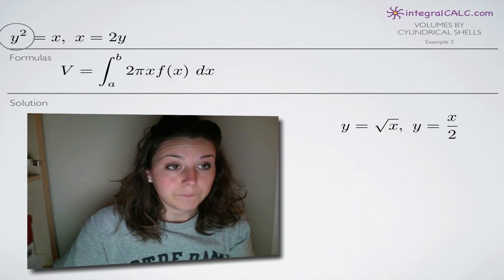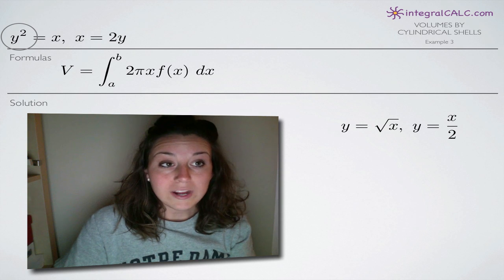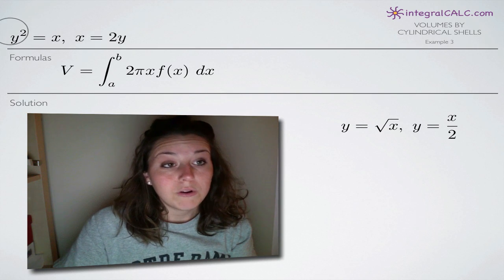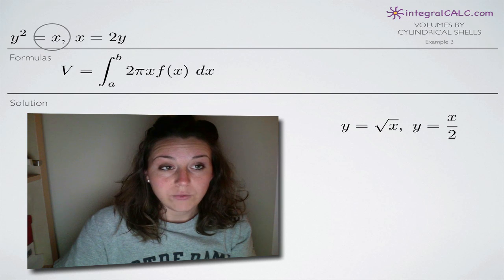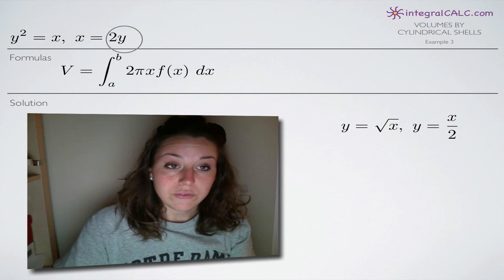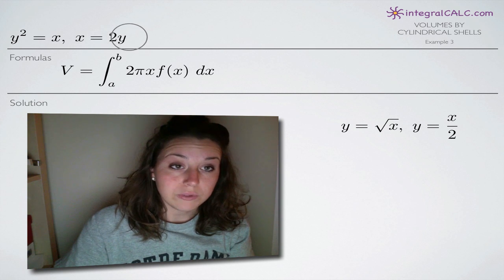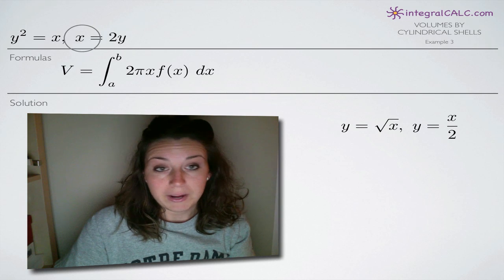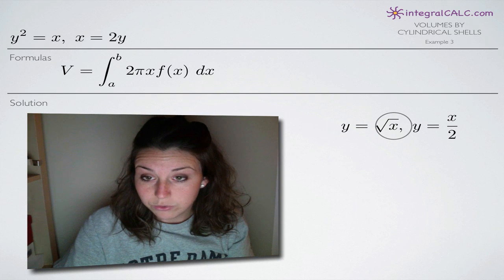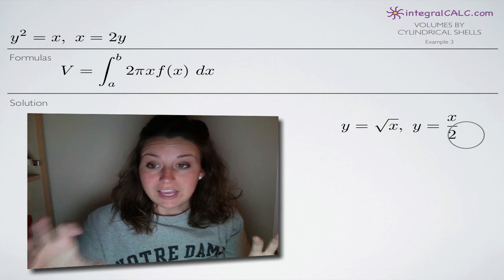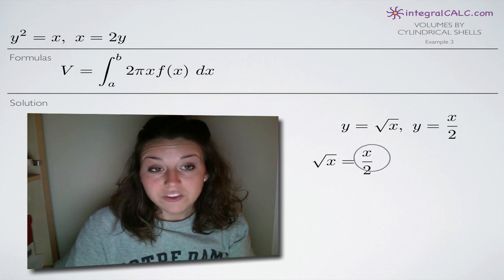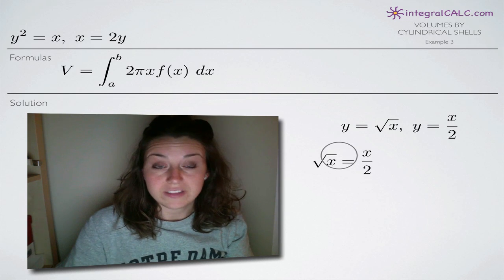If you look at the first equation, to solve y squared equals x for y, we'll take the square root of both sides. Taking the square root of y squared gives us y, and we're left with the square root of x on the other side — so y equals the square root of x. For the second equation, if we divide both sides by 2, we get y equals x divided by 2. Now that we've solved both for y, we can set the square root of x equal to x over 2 and simplify to solve for x. This gives us the points at which the two functions intersect.